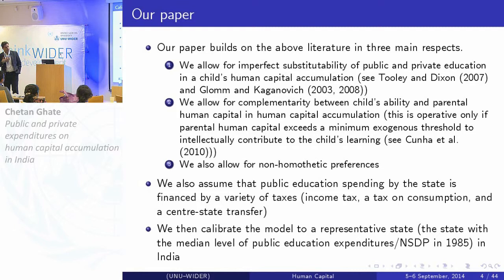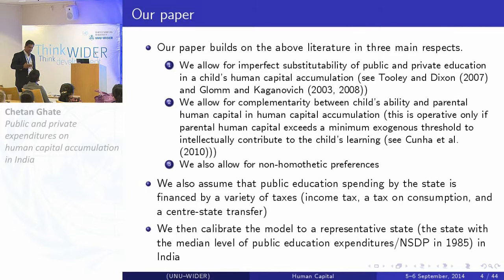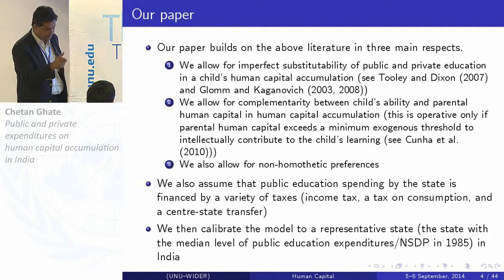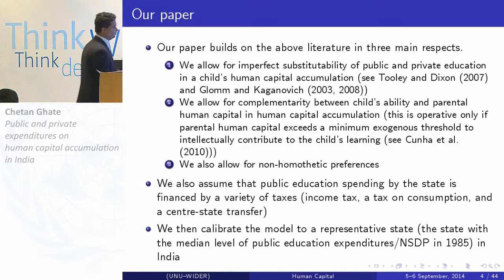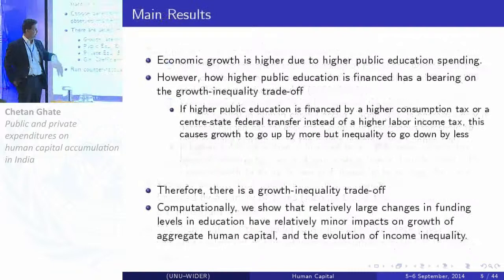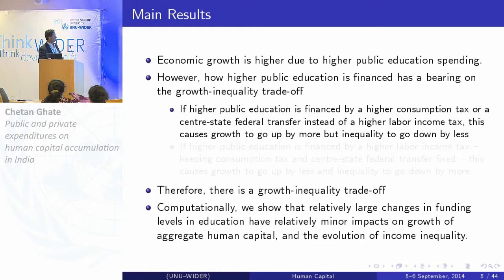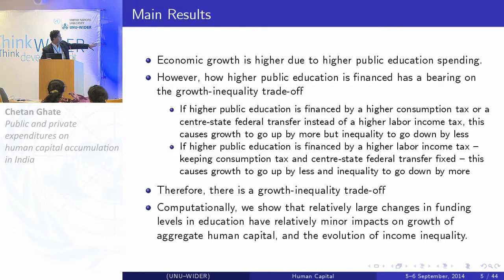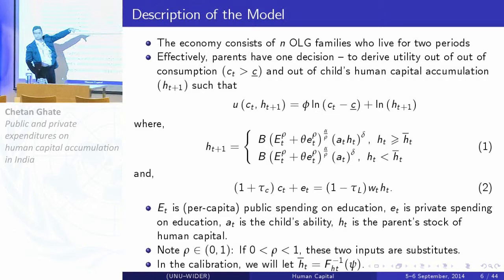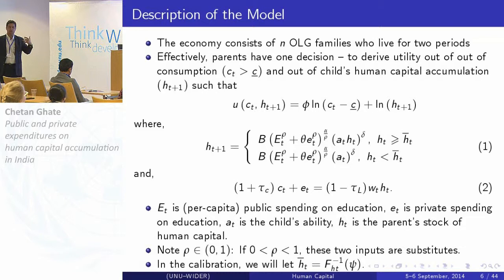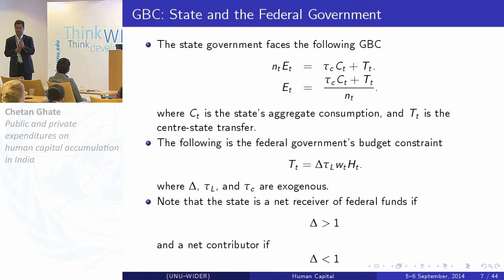The calibration strategy uses seven moments for the median state — Tamil Nadu in South India. We have Gini coefficients in 1985 and 2005, the growth rate across this period, public education expenditure shares, and private education expenditure shares in both periods, based on consumption expenditure survey data. We're able to pick parameters that reasonably mimic these seven moments in 1985. We also conduct a sensitivity analysis across a range of parameter combinations.